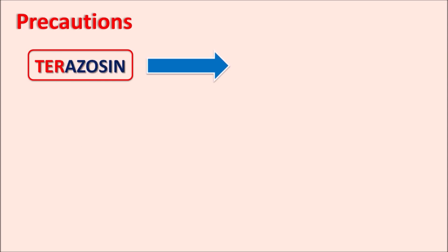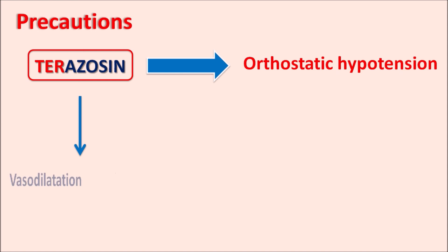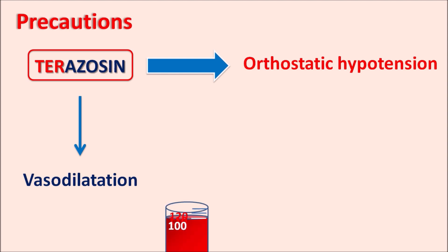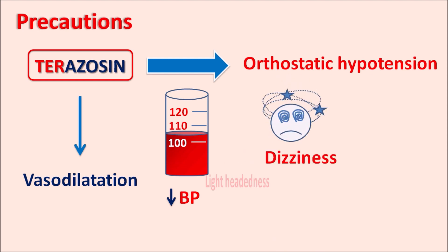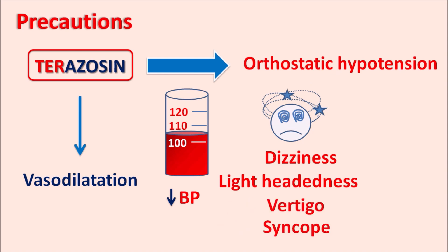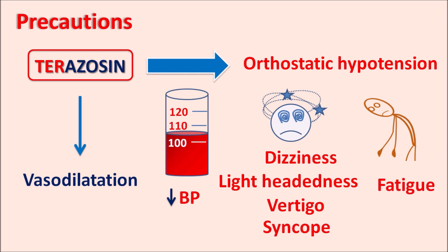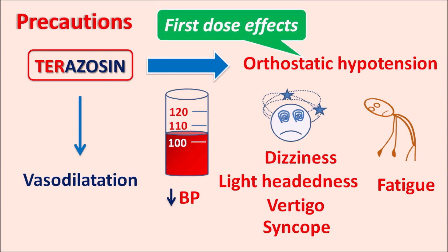Another important precaution is orthostatic hypotension, also called postural hypotension. Since Terazosin acts as a vasodilator, it produces hypotension that changes with body posture. Because of this vasodilation, blood pressure decreases and patients can experience dizziness, lightheadedness, vertigo, syncope, and fatigue. These effects are observed within the first few doses and are called first-dose effects. To minimize these first-dose effects, the lowest dose of Terazosin should be initiated and then gradually increased.